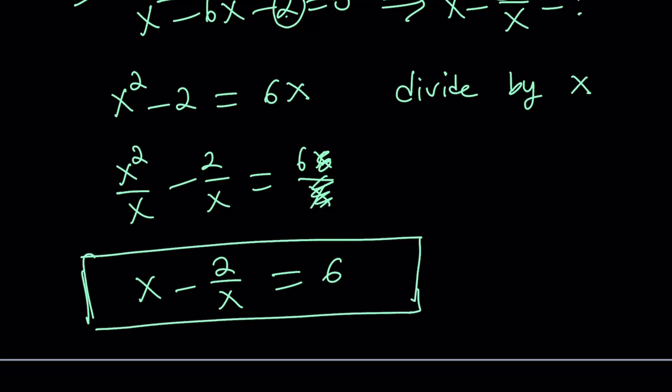And again, there's probably other ways to do it. You know, you can just isolate x squared, write it in terms of 6x plus 2, and then plug it in, so on and so forth.